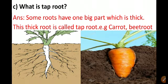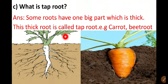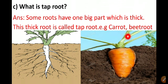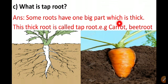Here is the C question: what is tap root? The answer is some roots have one big part which is thick. This thick root is called tap root. Examples of tap roots are carrot, beet root, and also many other examples like turnip and radish. These are all tap roots.